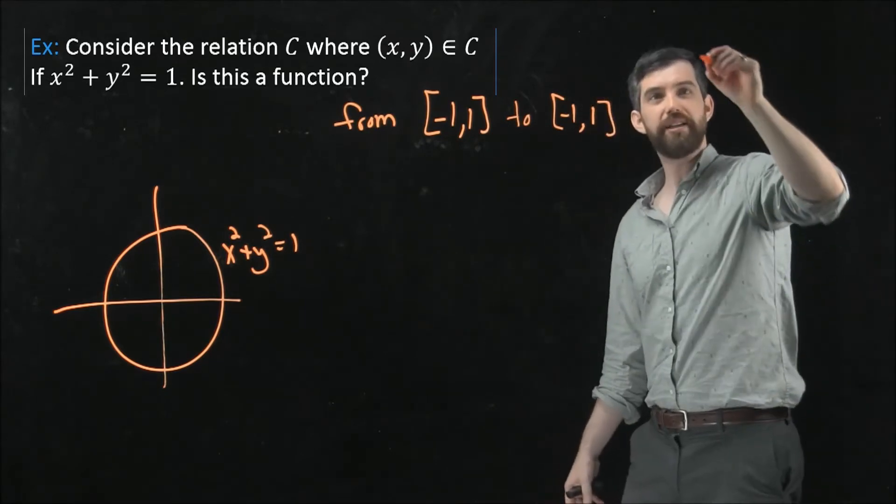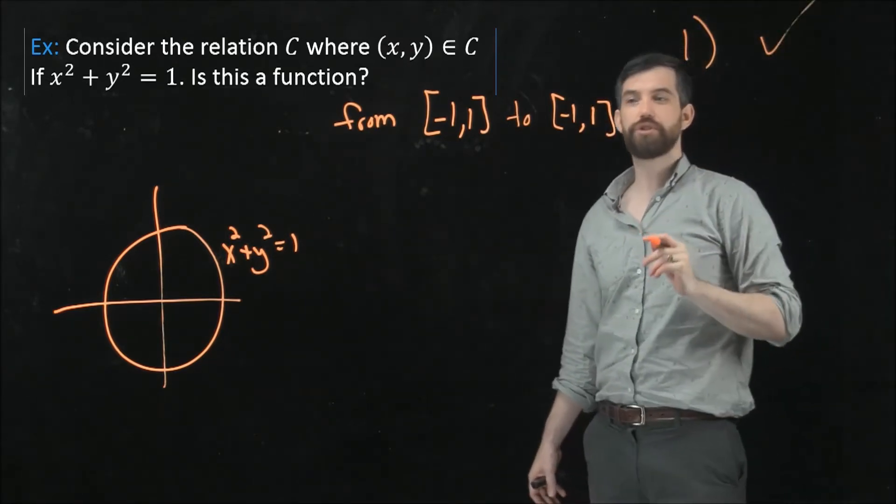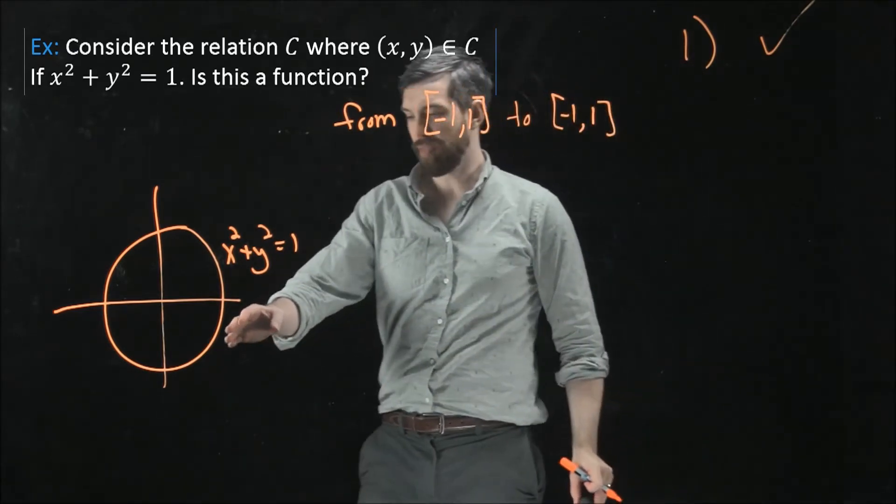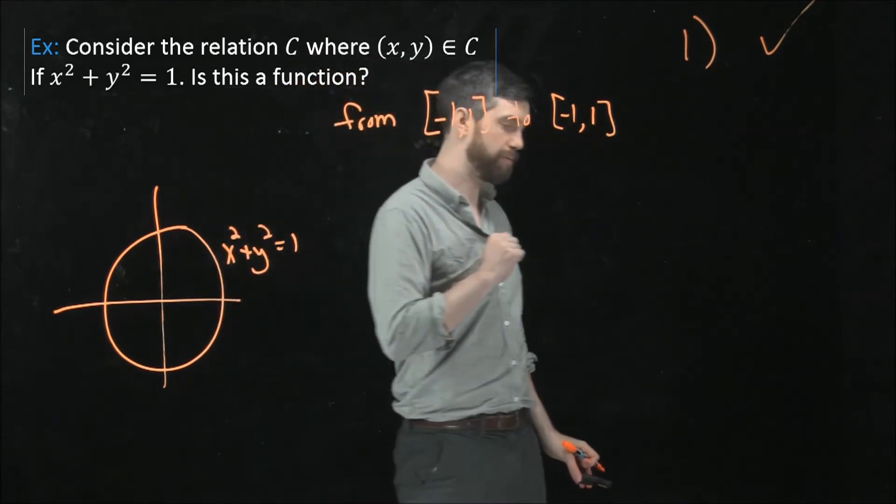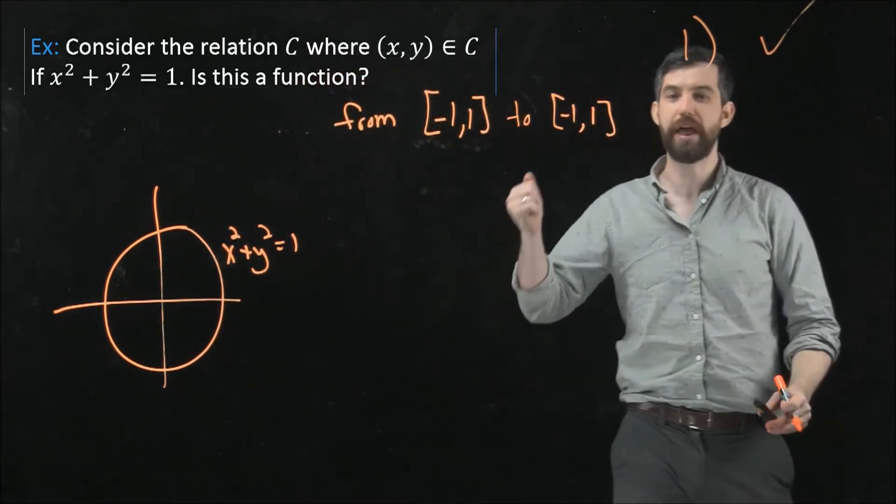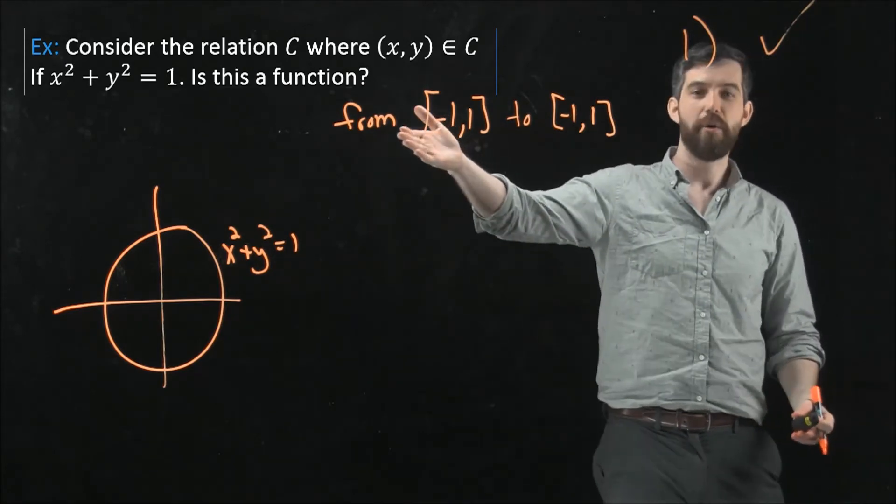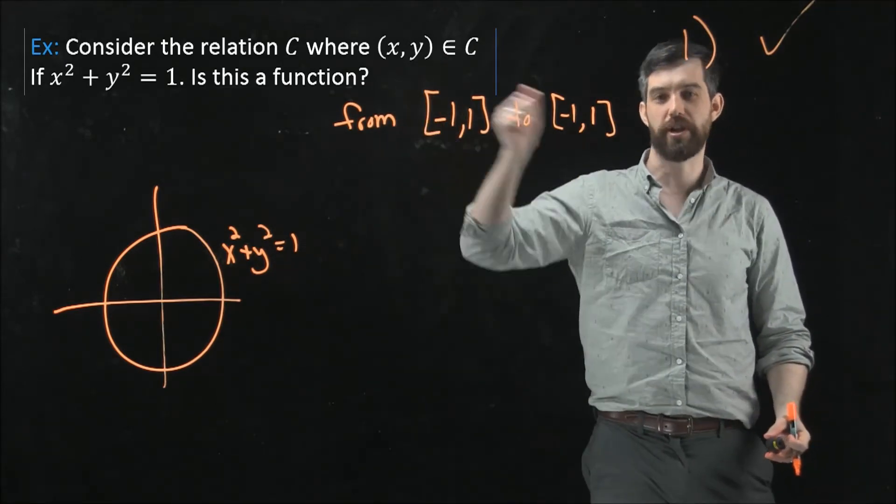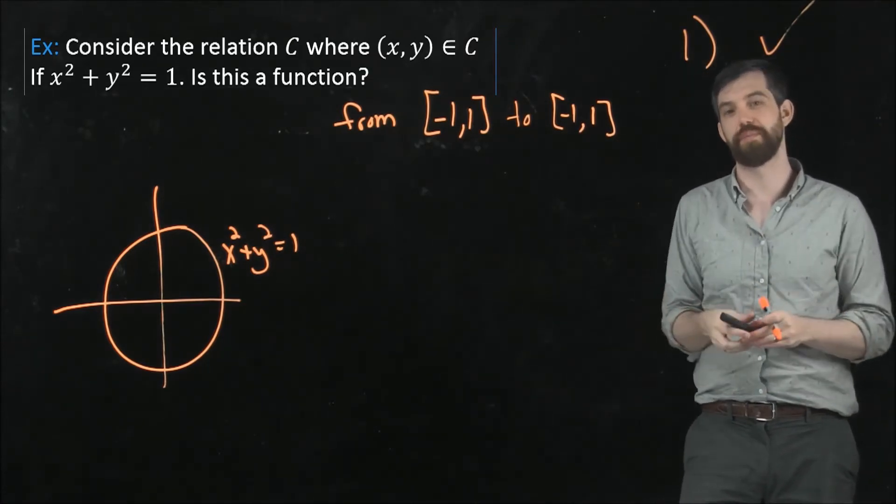So if I have my two different considerations to whether it's a function, the first of them is true. For every single input that I can imagine, how about like this x value, then there's going to be an output. So it is true that for every input, it is going to have an output, at least if I sort of make what we'll refer to as a restriction on the domain. Where I'm saying this is a function from these intervals, not a function from the entire real numbers.